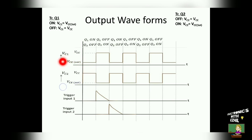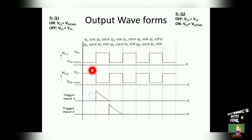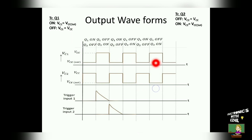Now we will see how to draw the output of transistor 1. During the first time slot, transistor 1 is at on state, so the output voltage VC1 stays at VCE saturation. During the second time slot, transistor 1 is at off state, so the output voltage is VCC — meaning the output switches from VCE saturation to VCC. During the third time slot the output is VCE saturation again, so the circuit switches from VCC to VCE saturation, and this pattern repeats.